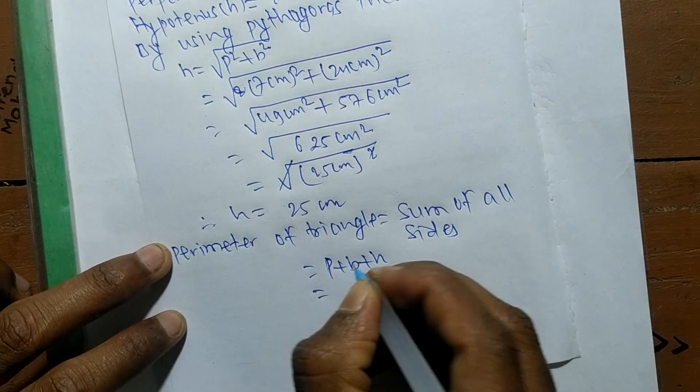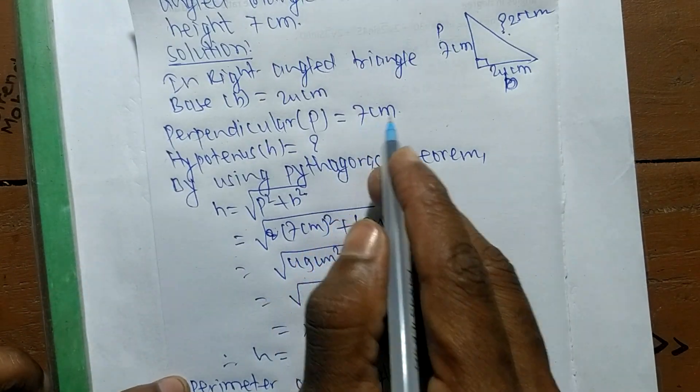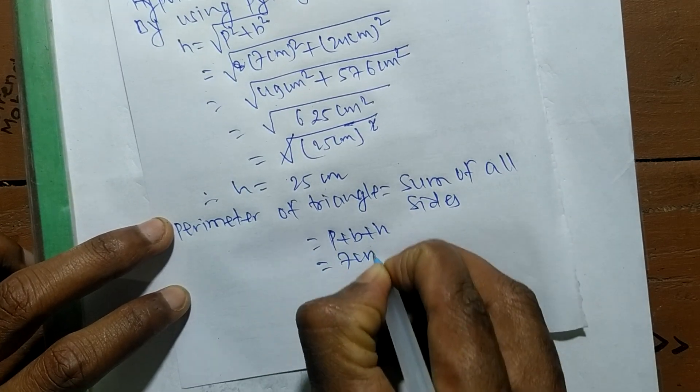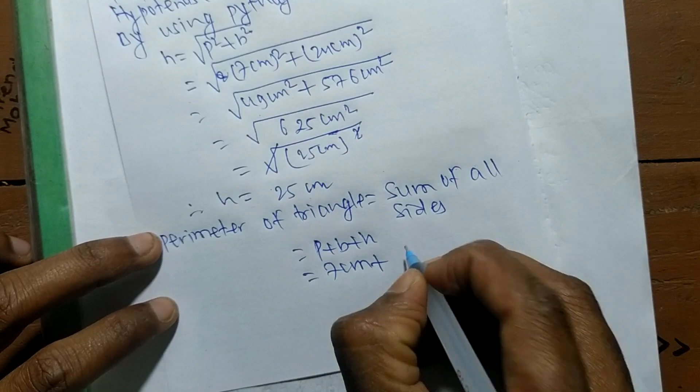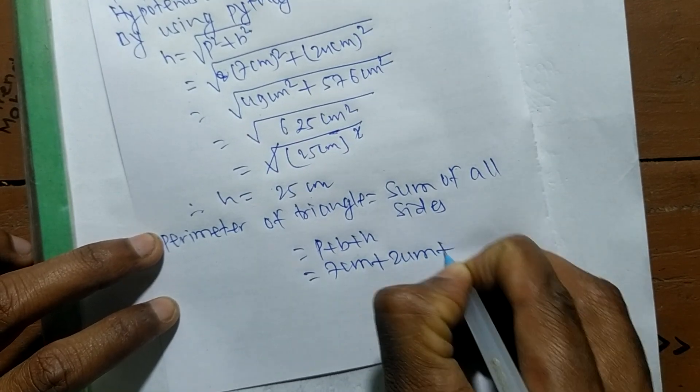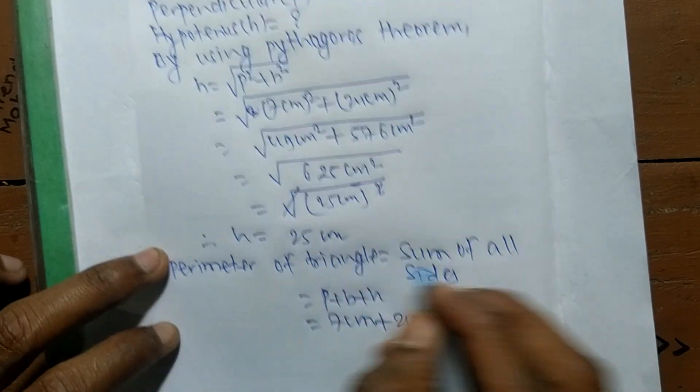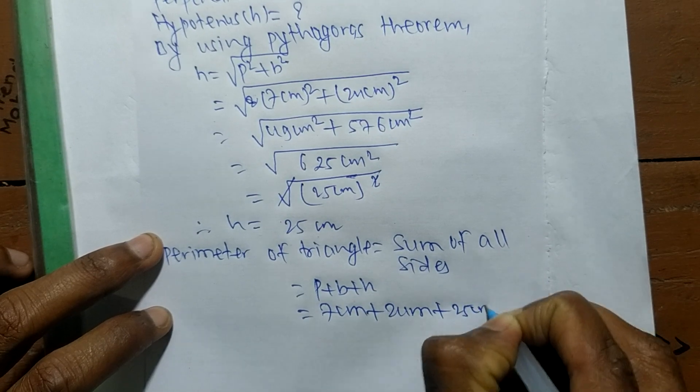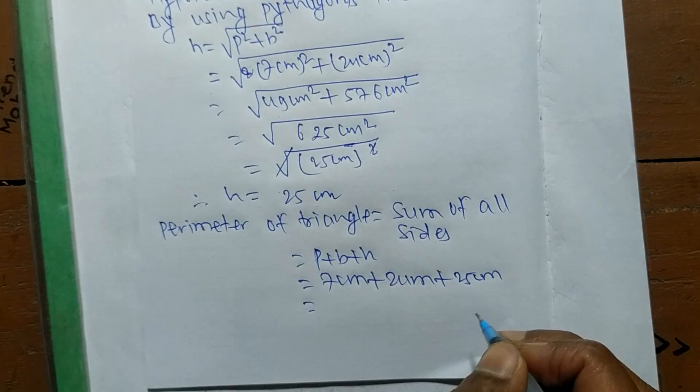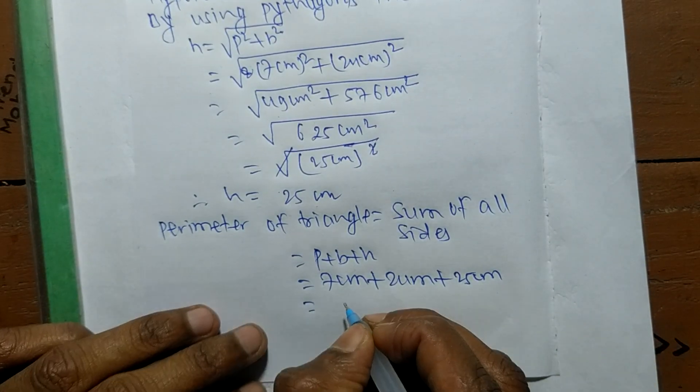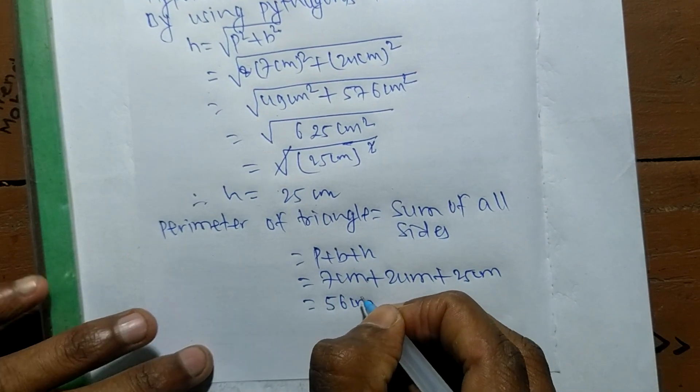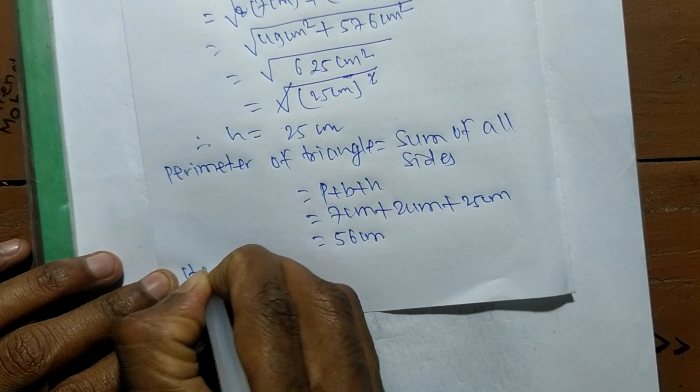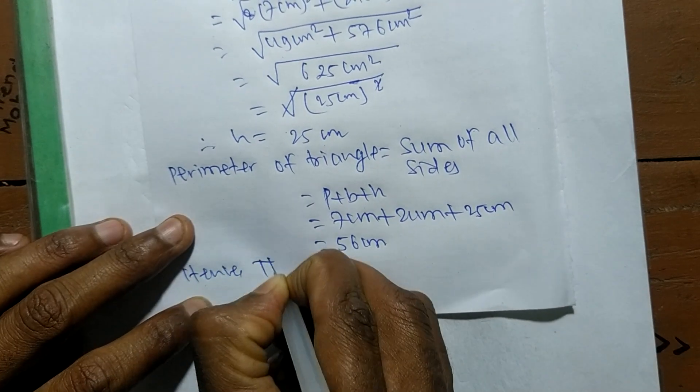In a right-angled triangle, the sides are perpendicular, base, and hypotenuse, so it is P plus B plus H. The value of P is 7 centimeters, the value of B is 24 centimeters, and we got the value of H which is 25 centimeters.